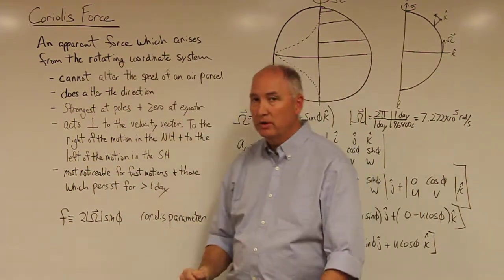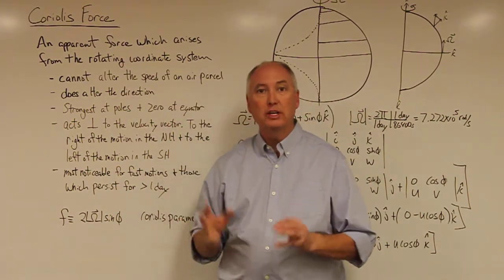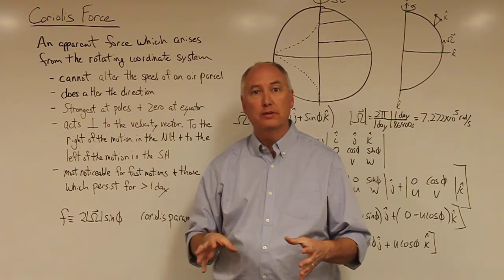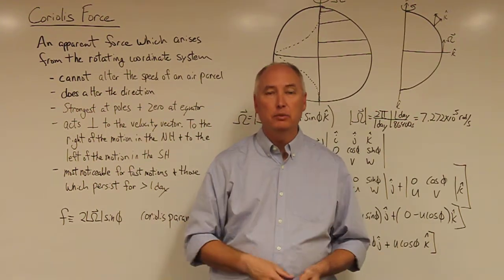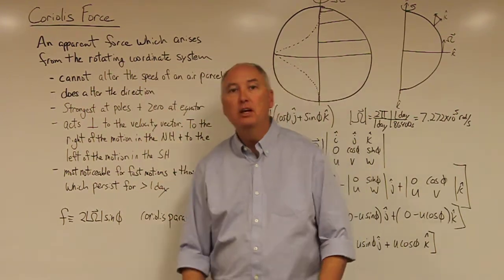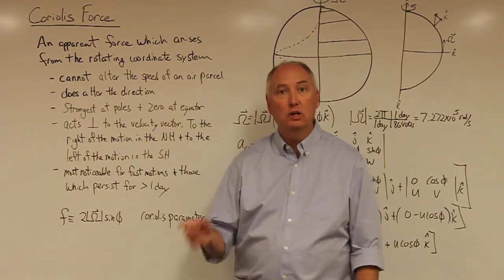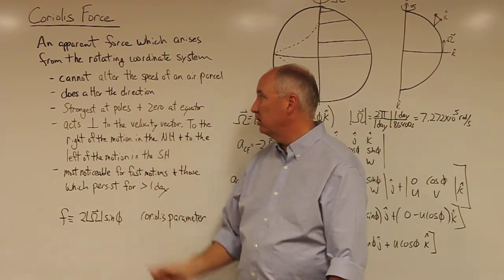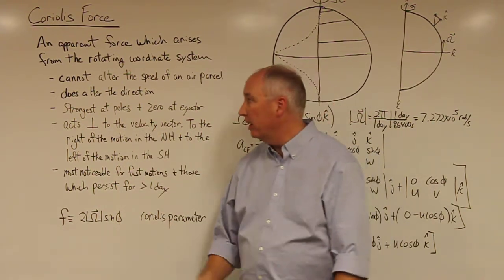So this Coriolis force is an apparent force that's only apparent to an observer that happens to be in the rotating reference frame. It cannot alter the speed of an air parcel, but it can alter its direction. It's strongest at the poles. It's zero at the equator.